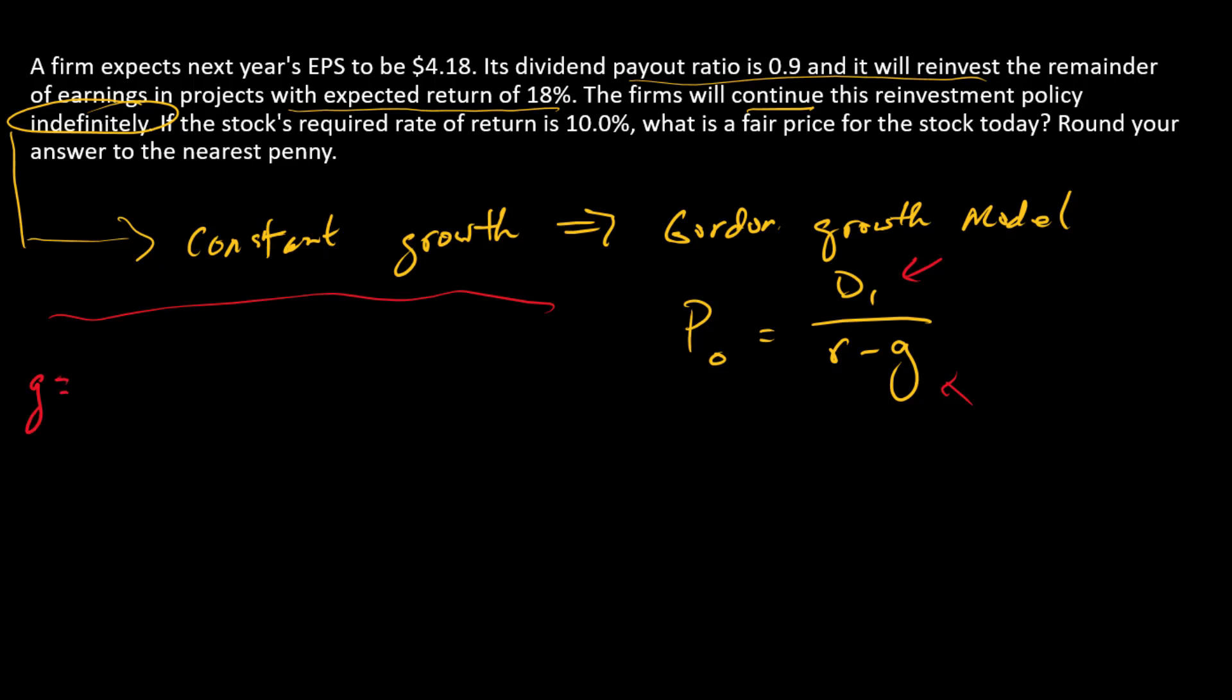G, the constant growth, we know is the plowback ratio times ROE, or the expected return on new projects. And so what are those numbers from this problem? We know that the payout ratio is 0.9. And so the plowback ratio is just 1 minus that. So plowback equals 0.1. And so we can put 0.1 here.